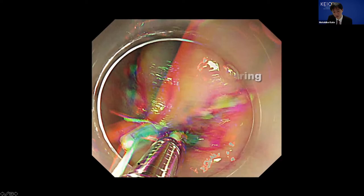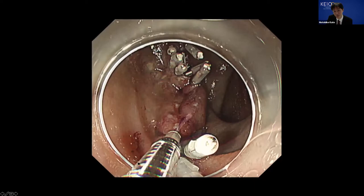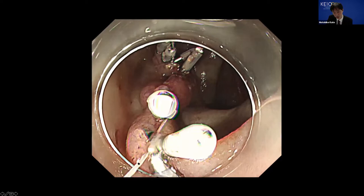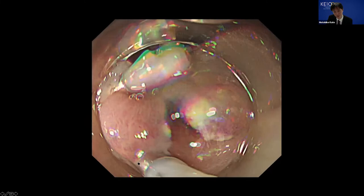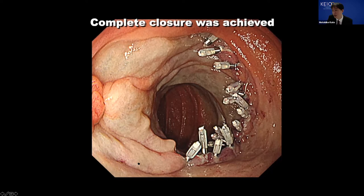After that, we cut the string using scissors forceps, and sometimes we add the next clip with string. If you clip and approximate the mucosal defect, it is much easier to add further clips. Finally, we achieved complete closure for this large mucosal defect, and this patient was discharged without any adverse event.